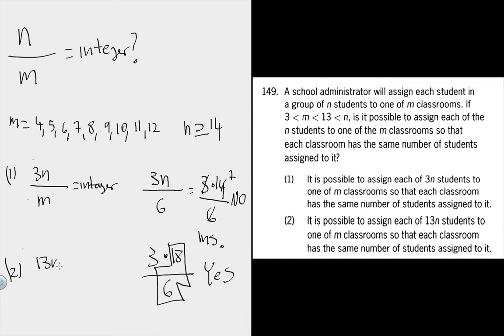Statement 2 looks pretty similar. We're told that if you multiply n by 13, then that divided by m is going to be an integer. There's not going to be any remainder - we'll be able to spread out those students equally amongst the classrooms.